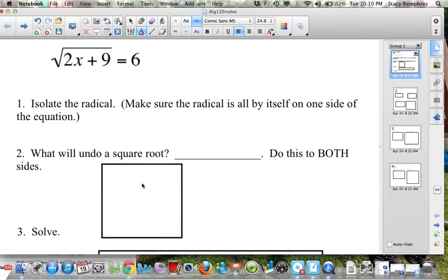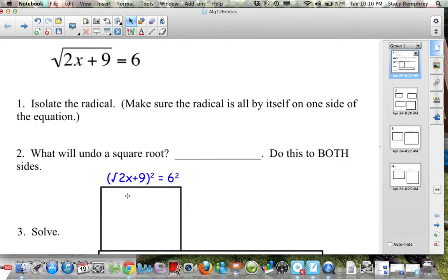So you're going to square both sides. Notice I put both. So you see, I squared both sides. When I square both sides, that undoes the square root on one side and squares the 6. So again, make sure you're doing it to both sides.